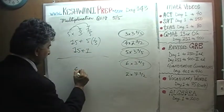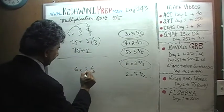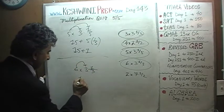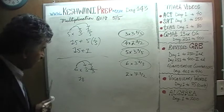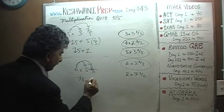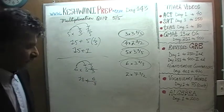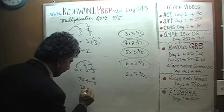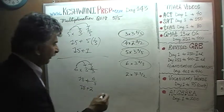Next is problem sixteen: six times three and one third. Six times three is eighteen, and six times one third gives us six thirds. Six thirds is just two. So it's just eighteen plus two.